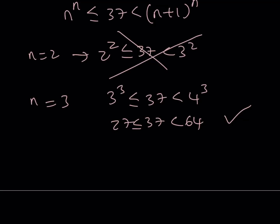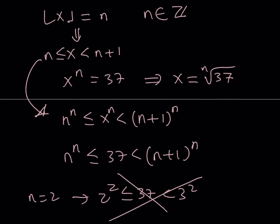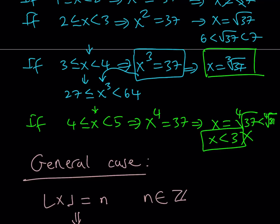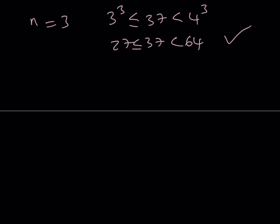Which means that the cube root of 37 is going to be... So, our equation was... Let me rewrite my equation. x to the power floor of x is equal to 37 has one solution, and that is equal to the cube root of 37.